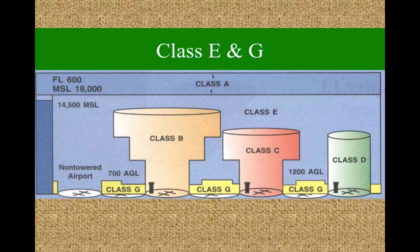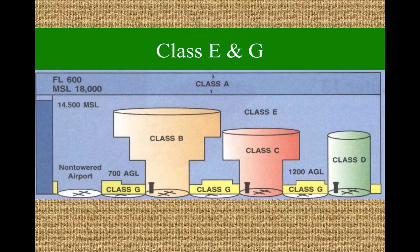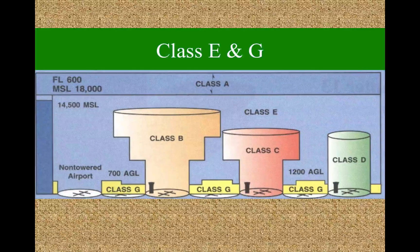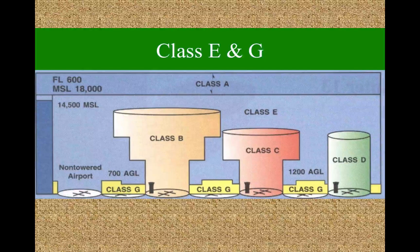E is controlled airspace and G is uncontrolled airspace. You'll notice that G is typically low level — it's usually found below either 1,200 feet AGL or 700 feet AGL. I'm going to explain that in just a second. Most often it doesn't go any higher than 1,200 feet AGL, so it's pretty low level.